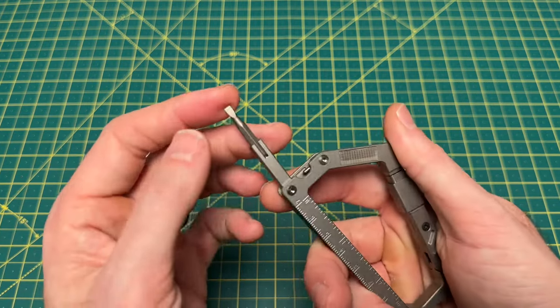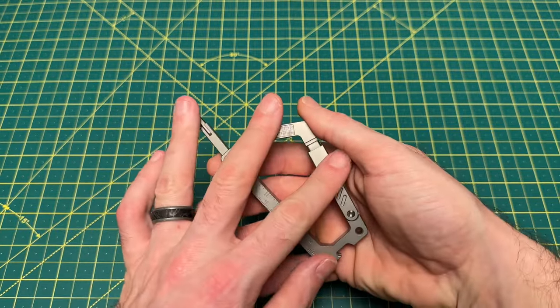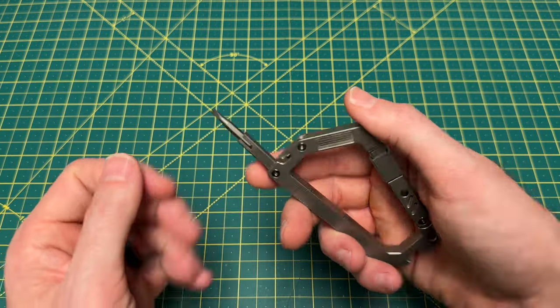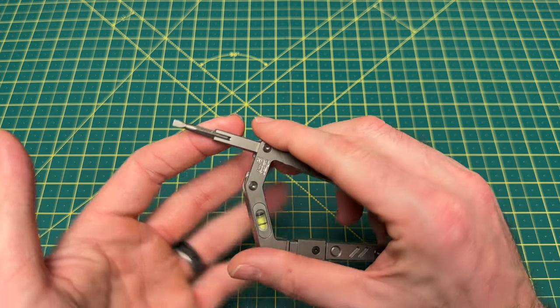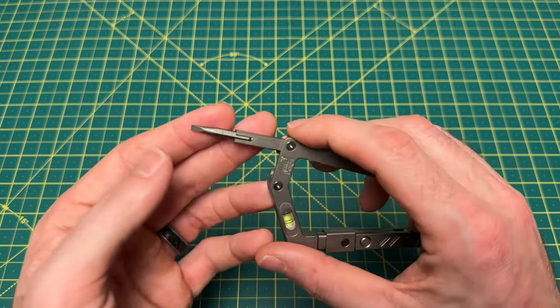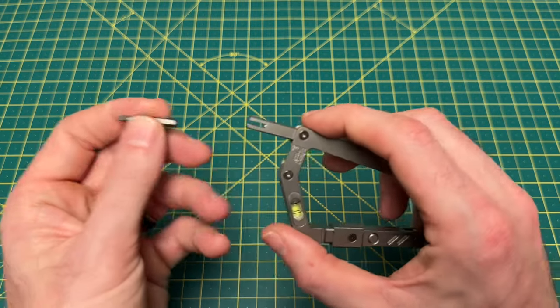Now, this one has a flathead, but keep in mind this is a prototype, guys. The one on the website is showing a Phillips head. So I'm assuming there will be a Phillips head shipping with this. Maybe a Phillips and a flathead. Check the Kickstarter for all the information on that. But a 4mm opening for the bit.